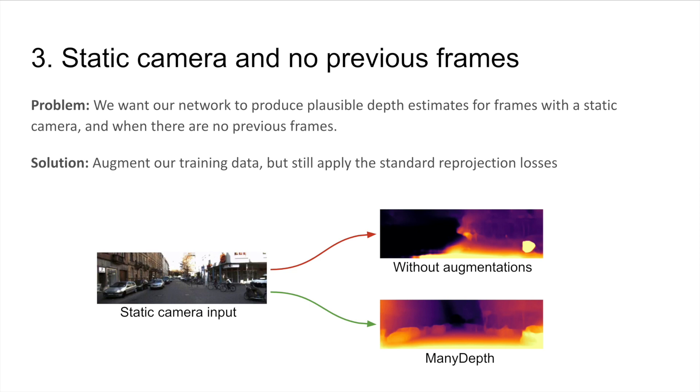In both cases, we importantly still apply the reprojection loss, teaching the network to be robust.